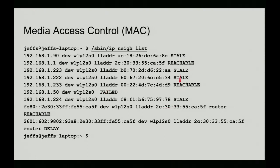These stale entries are easy to fix — if you just ping the IP address, it will become reachable. This one is reachable because it happens to be my default gateway, but we don't know that at the moment.